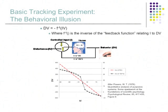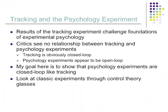So the behavioral illusion is that the relationship between independent and dependent variables appears to tell you something about the nature of the person — but it doesn't. Those are the two things the tracking task shows, and those two things blow away the basis of experimental psychology. Of course, experimental psychology hasn't gone away. The results of the simple tracking task challenge the foundations of experimental psychology, but critics — reviewers who review the papers I write about this — say that's what you find in a tracking task where it's obviously a closed loop situation, but that's not what's going on in psychology experiments because psychology experiments look to be open loop. And that's what I'm going to show you next.